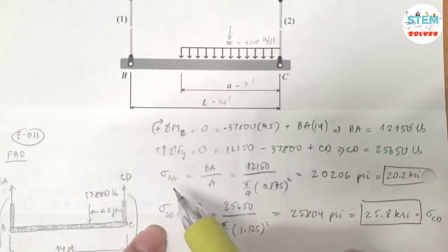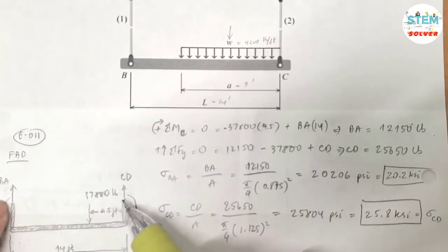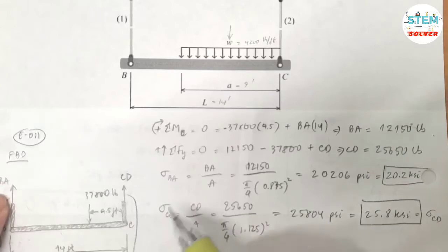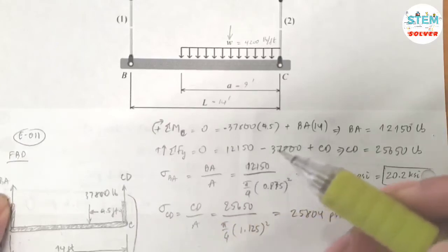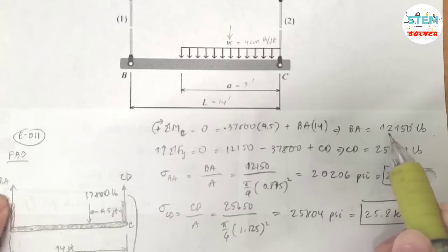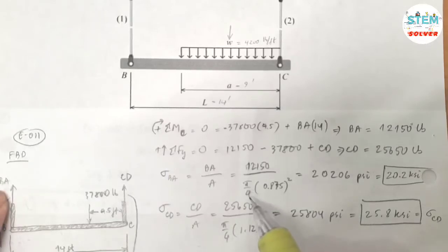Now, since we know the forces in each rod, we can find the normal stress in it. So let's start with cable AB. The normal stress in AB is equal to the force AB divided by the area of the cable. So AB, I found it was 12,150 pounds divided by the area of this rod. The area of this one is equal to pi over 4 times diameter squared.